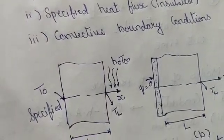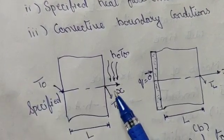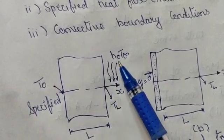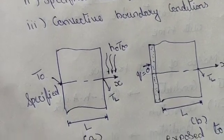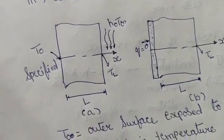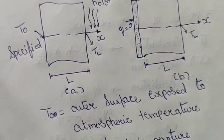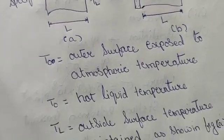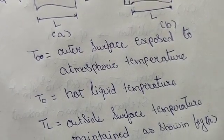Looking at the figure, we have T₀ at one end, T_L at the other end, with h₀ and T∞ indicated. The length is shown where T∞ is the outer surface temperature exposed to the atmosphere. T₀ is the hot liquid temperature and T_L is the outside surface temperature, as shown in the figure.